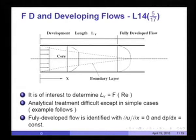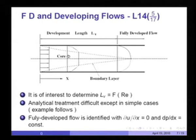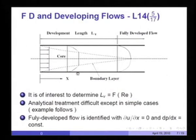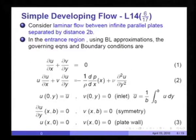For more complex cases involving complex cross-sectional ducts or curved ducts, one really has to adopt CFD-based computer procedures. I will take up a very simple case: flow between two infinite parallel plates, both extending in the z-direction. The y-direction is measured from the bottom plate going upward. The inter-plate distance is 2b, so the distance between one wall and the axis of symmetry is simply b. We consider laminar flow between infinite parallel plates separated by distance 2b in the entrance region using boundary layer approximations.